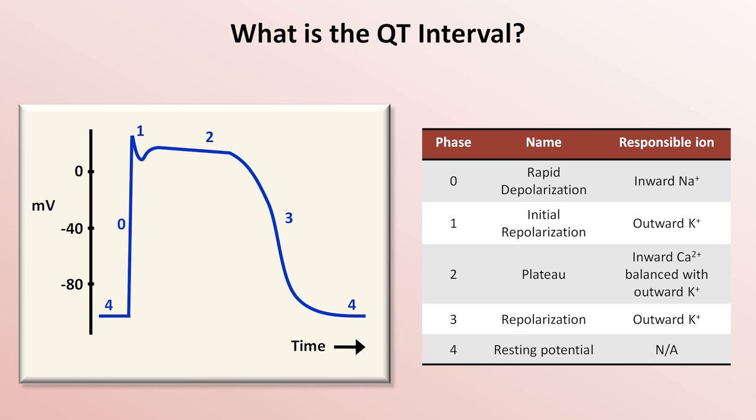Since this time period is determined by the balance between potassium and calcium currents during the plateau phase, it's easy to see why abnormalities of the QT interval are often associated with either hereditary defects in potassium or calcium channels, drugs which impair those channels — specifically potassium channels — or with serum levels of those ions.